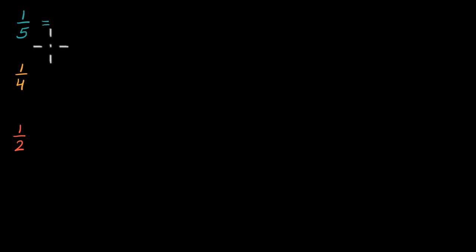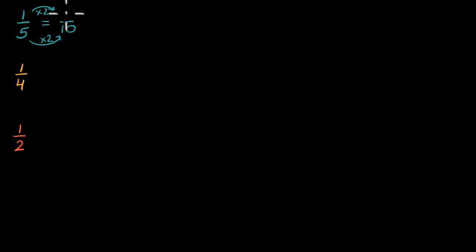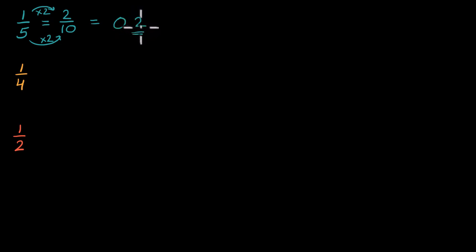You could say: let me see if I can represent this as a certain number of tenths, because if you know how many tenths, we know how to represent that as a decimal. To go from fifths to tenths, you multiply the denominator by 2, so multiply the numerator by 2 as well. So 1/5 — 1 times 2 — is the same thing as 2 tenths. That's 0.2; this is the tenths place, so we have exactly 2 tenths.